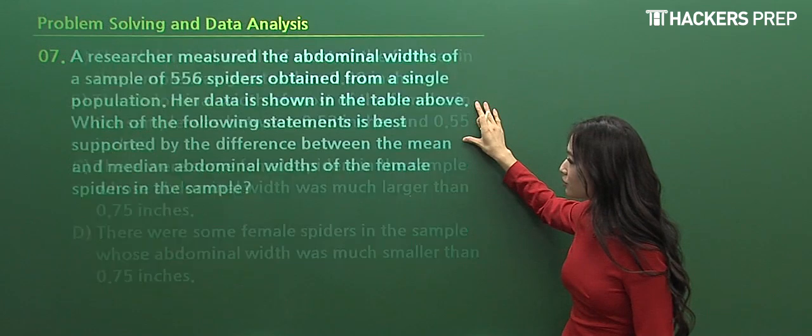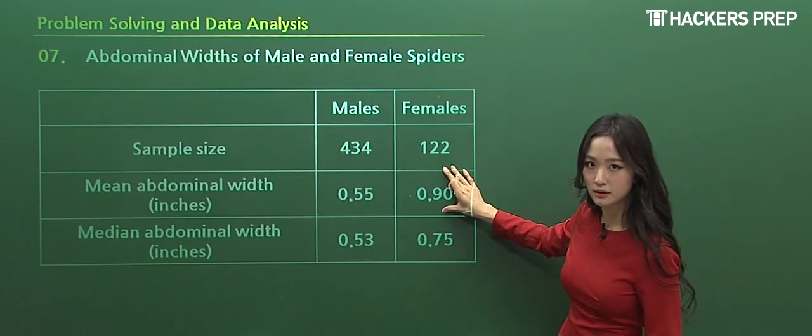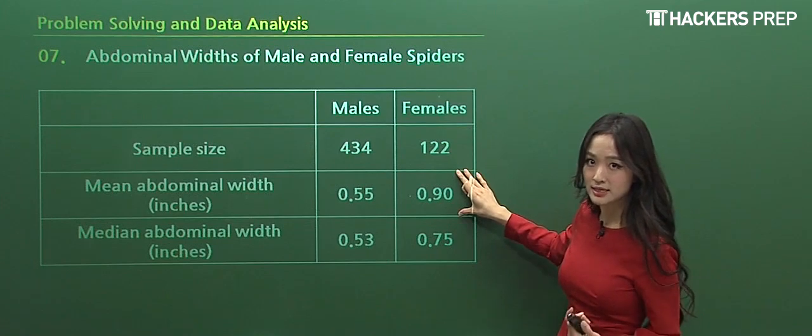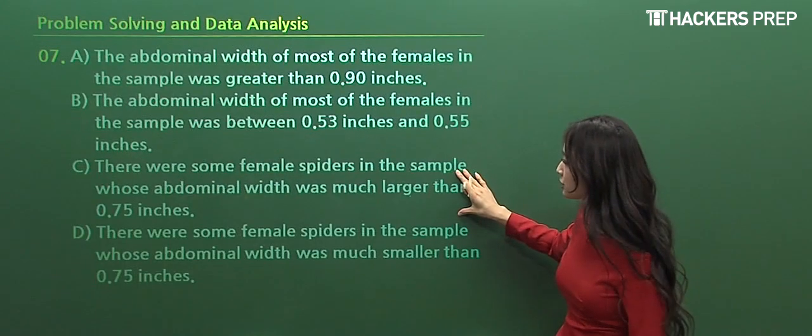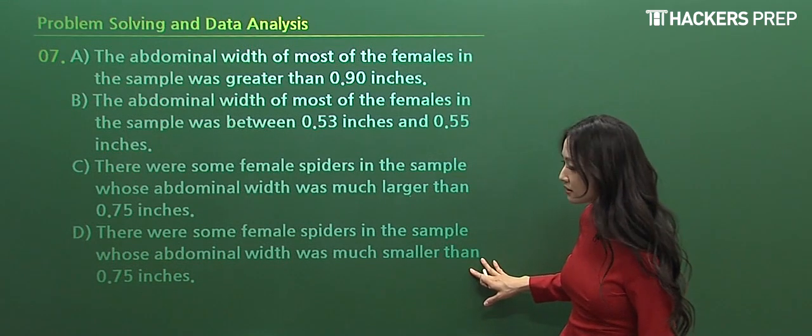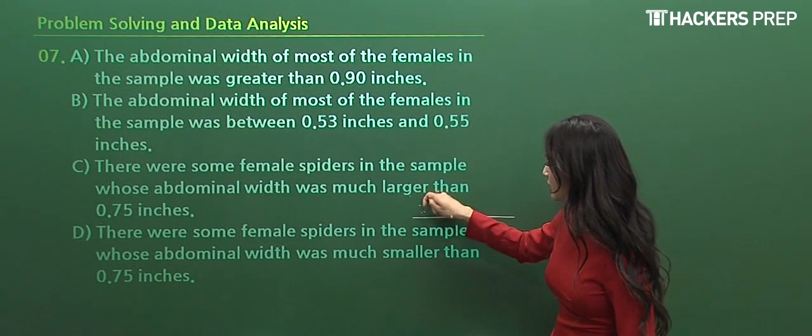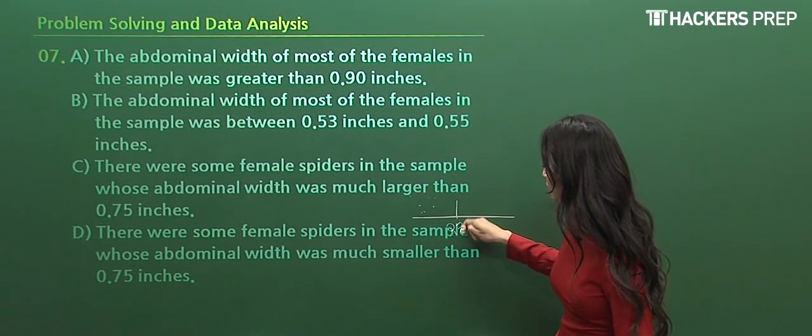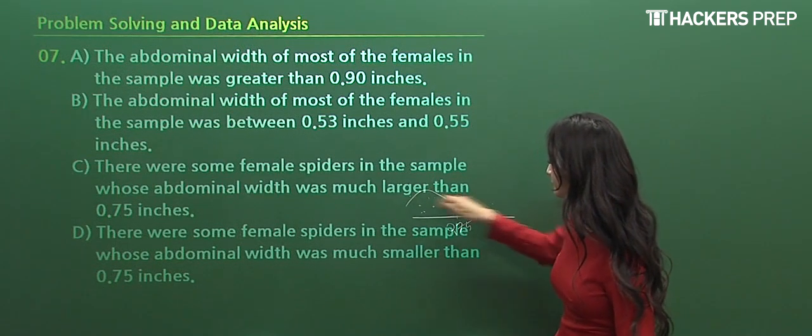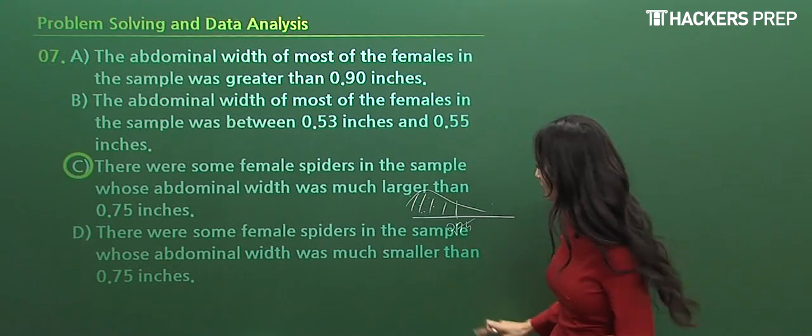And D, there were some female spiders in the sample whose abdominal width was much smaller than 0.75. Then we can see that with our data point occurring a lot more below 0.75, our average and median would not match up. Okay, so C is the correct version.